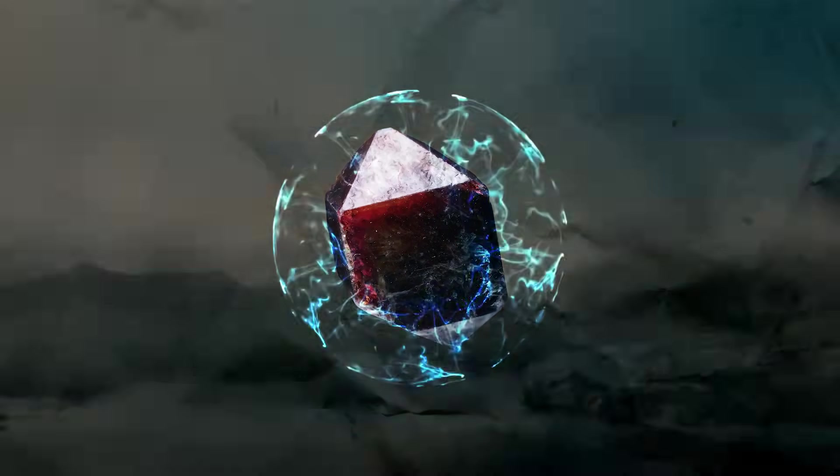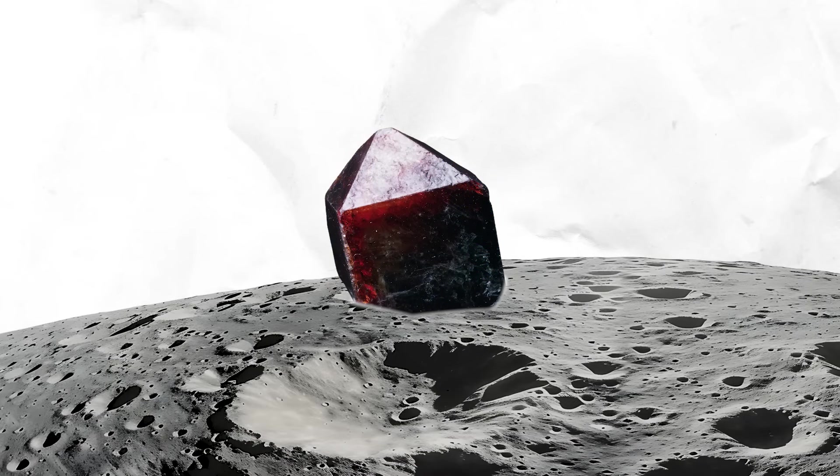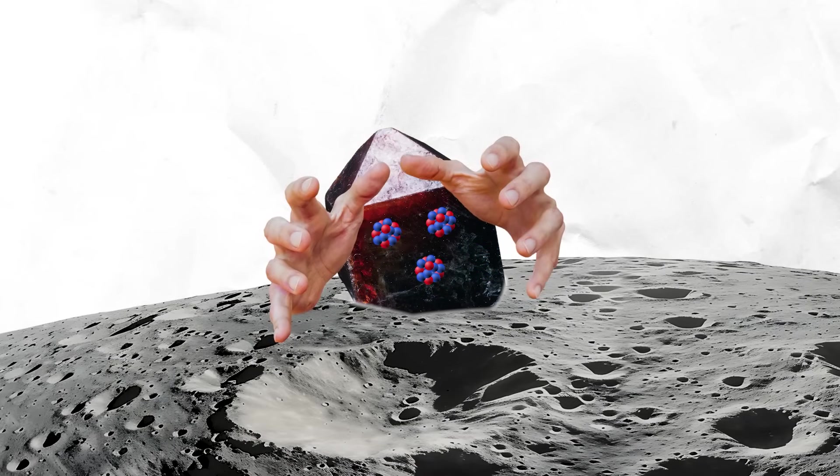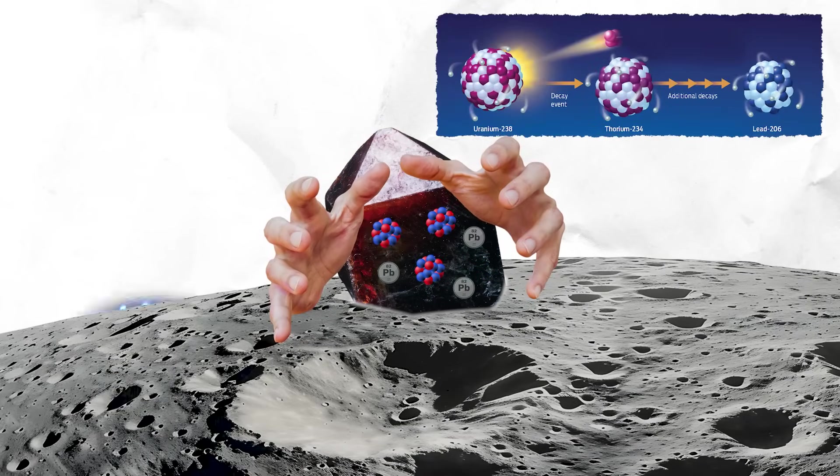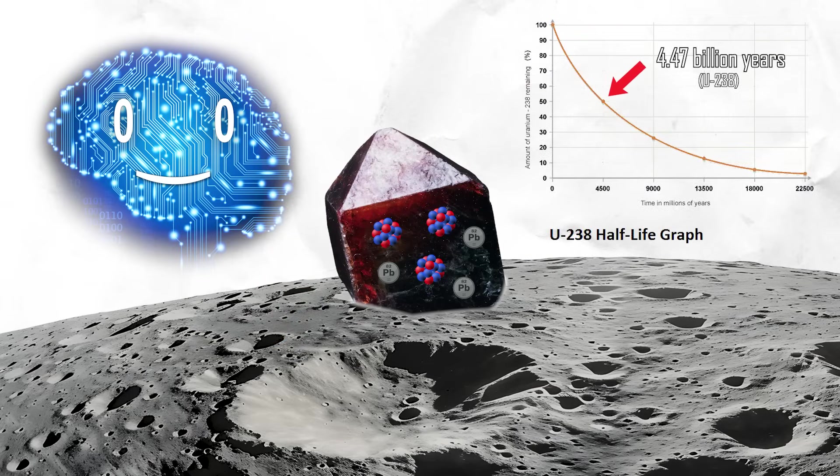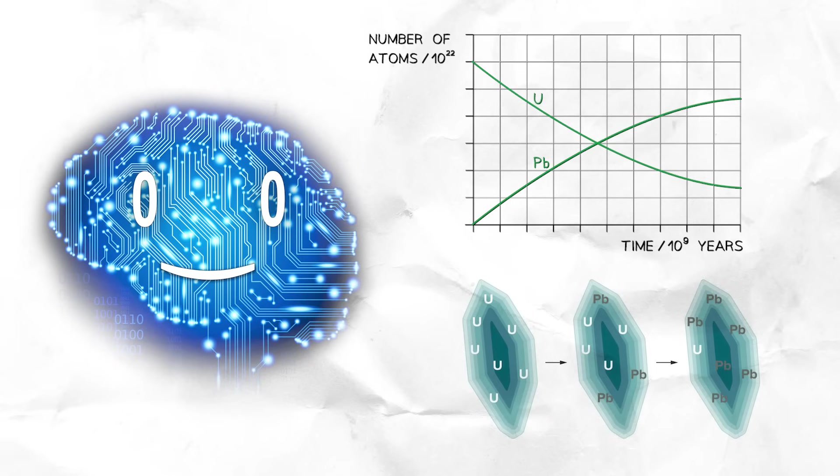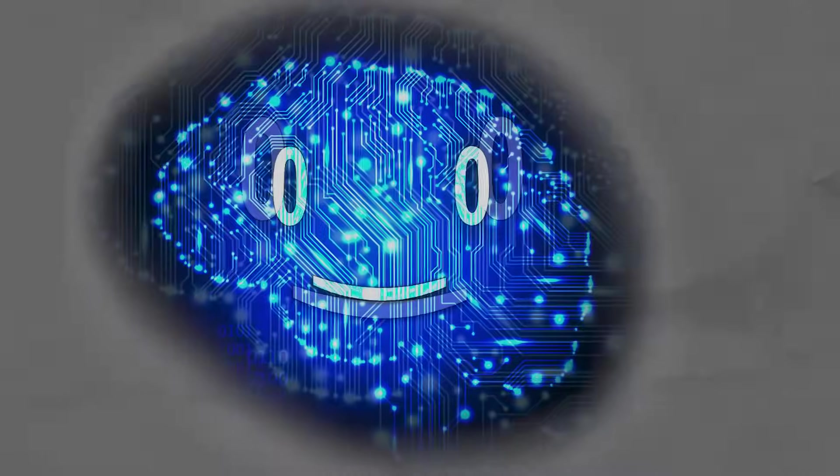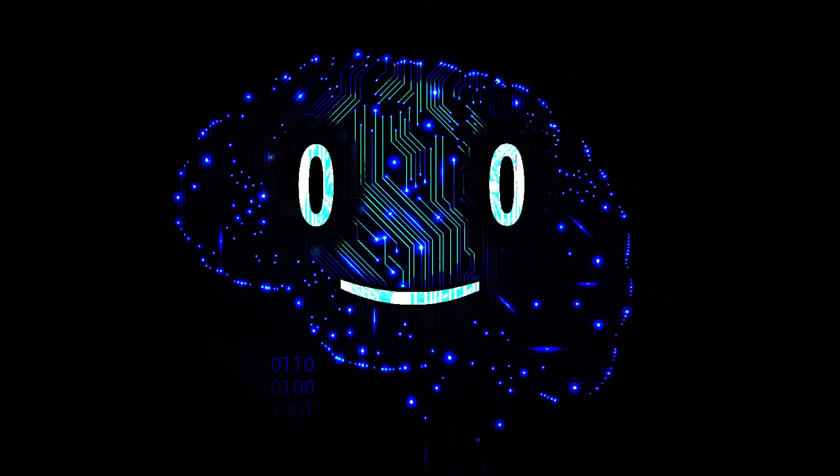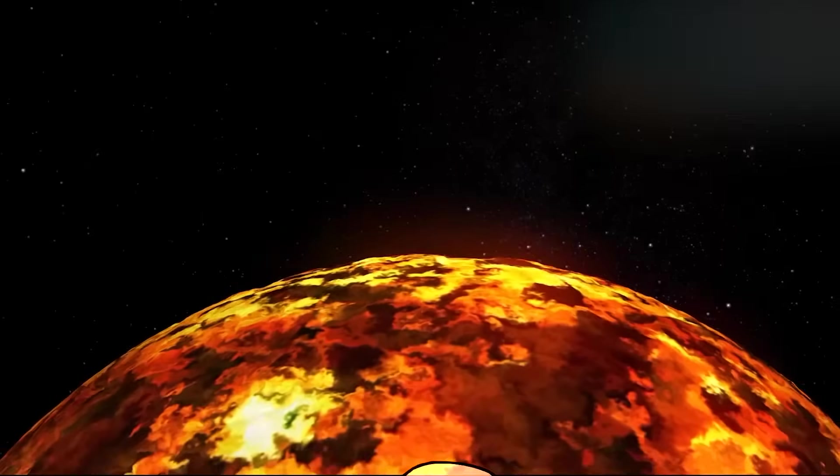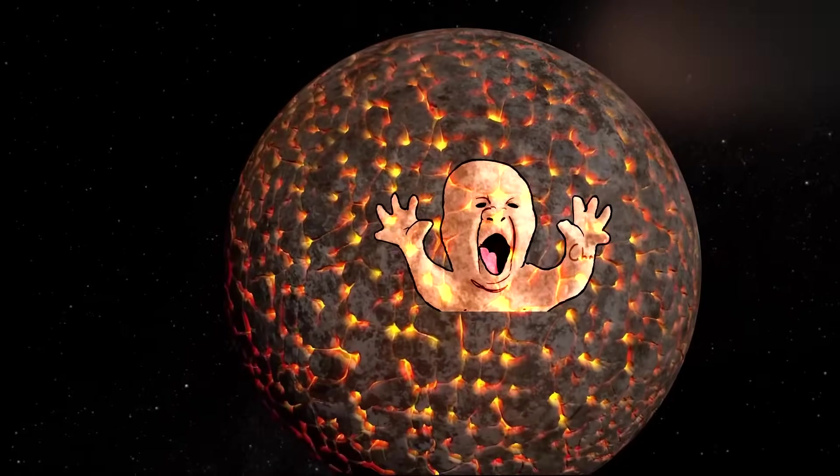The thing about the all-knowing zircon crystals is that they're crazy tough and can survive for billions of years unaltered. When they formed, they trapped uranium atoms inside, which would eventually decay into lead. Because the half-life of the uranium isotopes is known, we can calculate how old they are from the ratio of lead and uranium isotopes in sampled crystals. And like war veterans, the more lead they contain, the older they are.